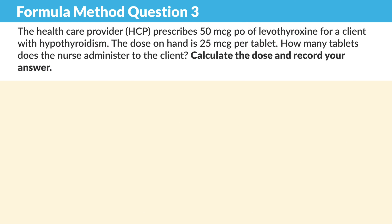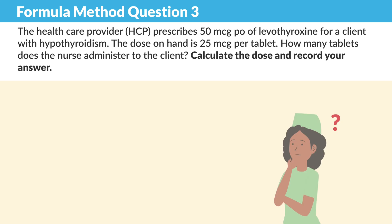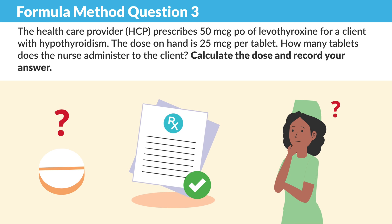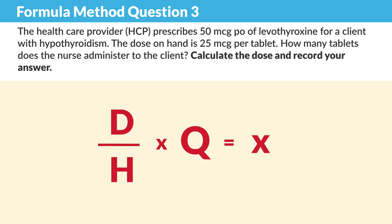All right, let's break it down. First, identify what you're solving for in the question. In this question, how many tablets should the client receive? Next, we're going to set up the formula method — desire over have, so D over H times Q.